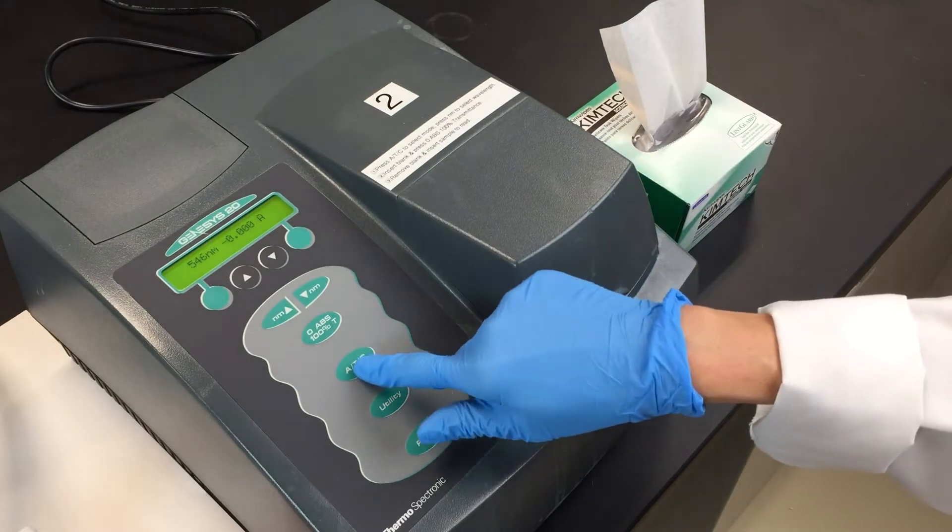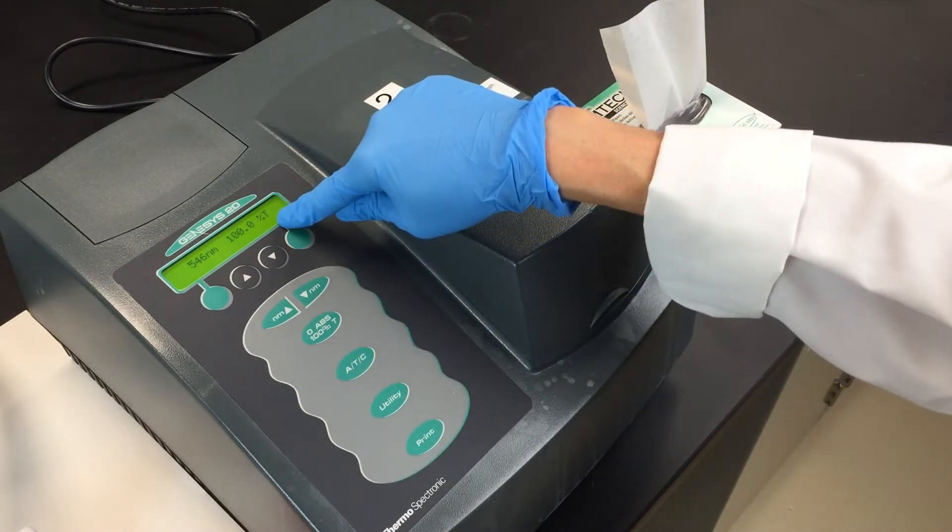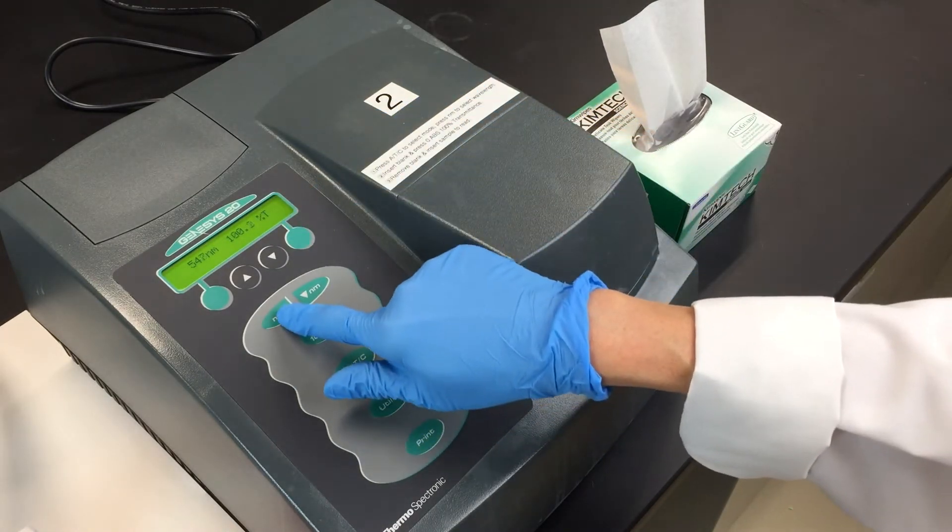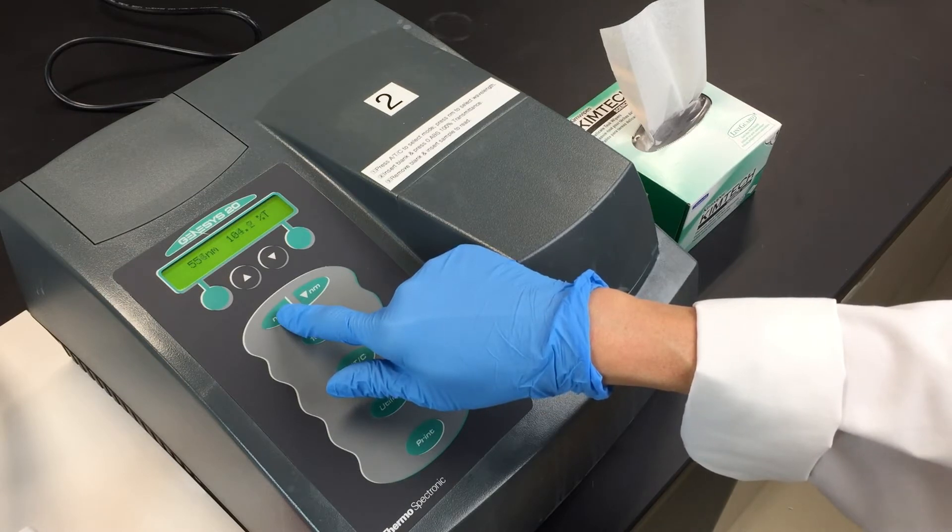Press the ATC button to change to percent transmittance and press the nanometer up and down buttons to set the wavelength to 625 nanometers.